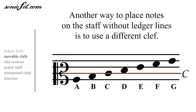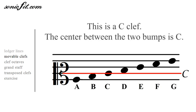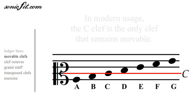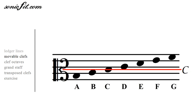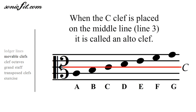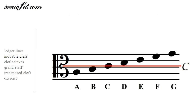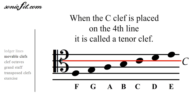In this case, a C clef shows where C is between the two bumps. In modern usage, the C clef can be placed in different places on the staff. When it's on the third line — the middle line — it's called an alto clef, and this is played by the viola. When it's on the fourth line, it's called a tenor clef, sometimes played on the cello or the bassoon.